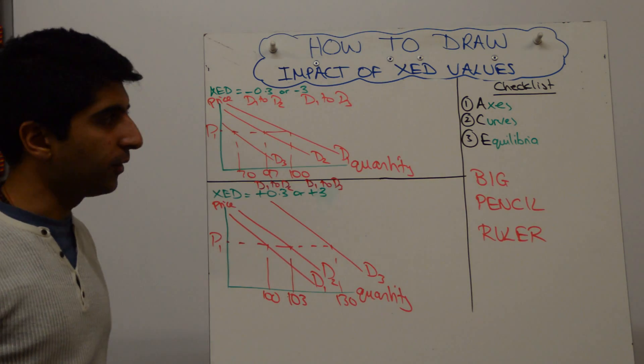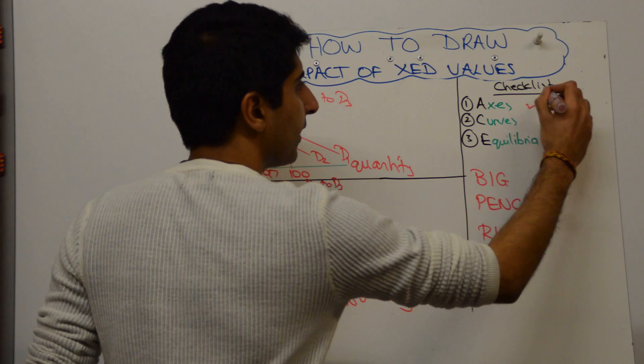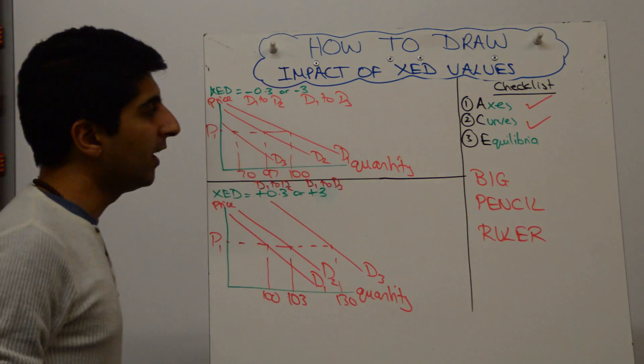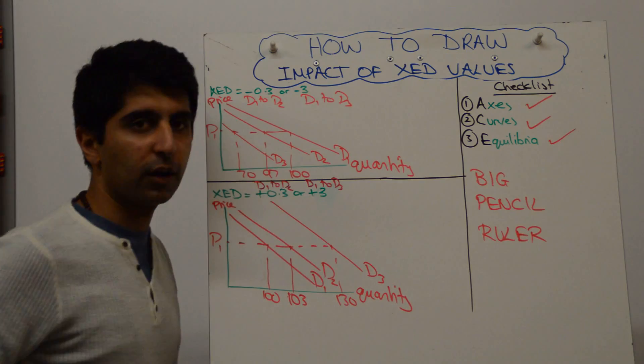As always, check the checklist. There isn't much to worry about here except labelling everything, which we have done. We've labelled our axis, we've labelled our curves, fine. There are no equilibrium, but we have done the price and quantities correctly as well, so we can tick that off too.